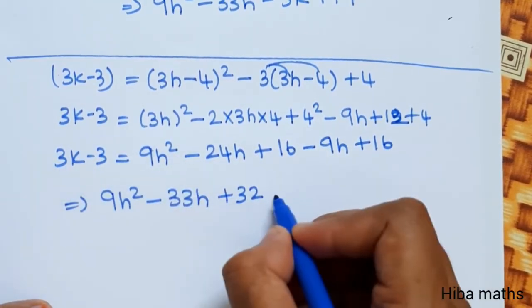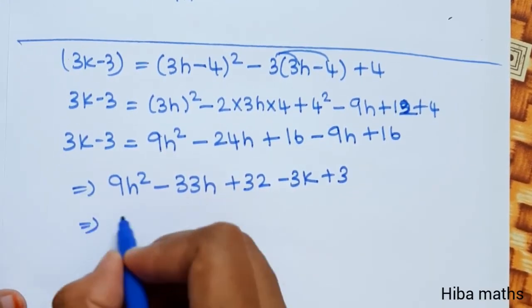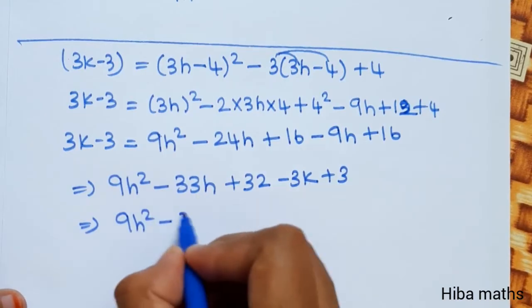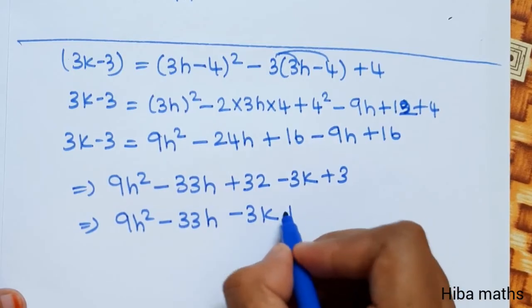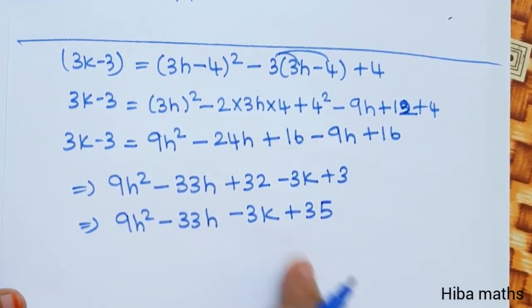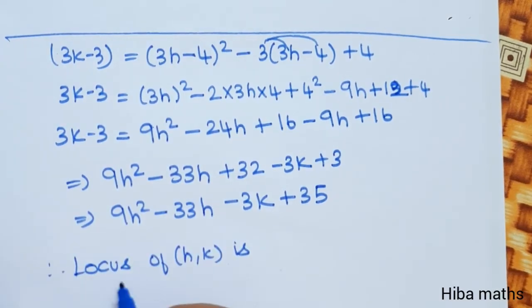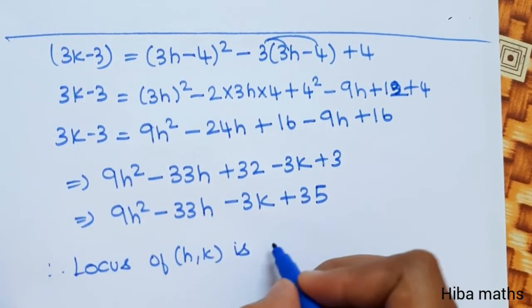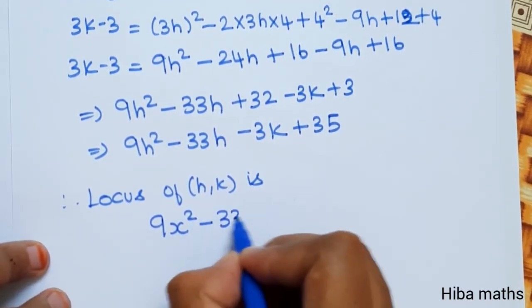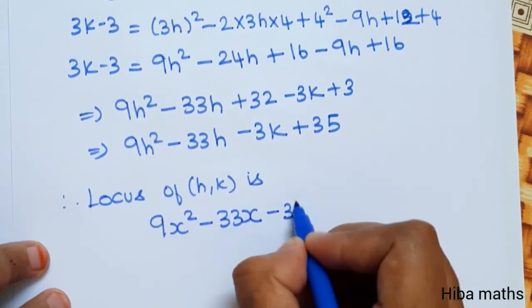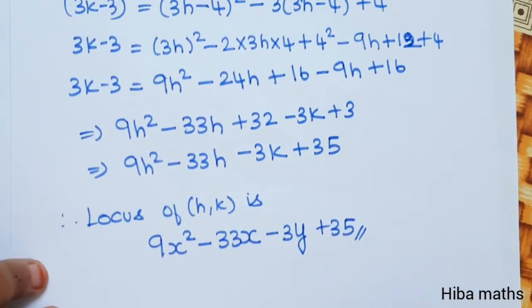Rearranging: 9H² - 33H - 3K + 32 + 3 = 0, giving the final answer: 9H² - 33H - 3K + 35 = 0. Thank you so much for watching.